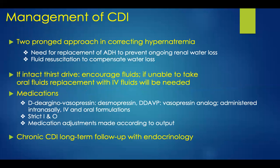Management of central DI involves a two-pronged approach: replacement of ADH to prevent ongoing renal water loss, and fluid resuscitation to compensate for the water loss. If there is an intact thirst drive, encourage oral fluids; if unable to take oral fluids, replace with IV fluids, or a combination of both. As far as medications, DDAVP — a vasopressin analog — can be administered intranasally, intravenously, or in oral formulations, with intranasal being commonly used. Strict intake and output monitoring is required, even on an outpatient basis, with medication adjustments made according to urinary output.